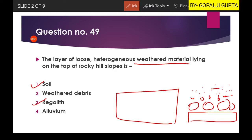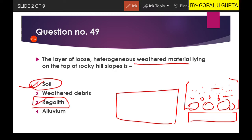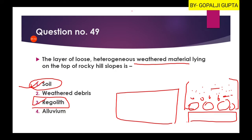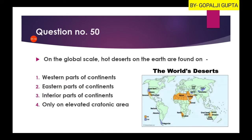This is known as regolith. Now if these fragments have the capacity to grow plants, then they will be called soil. So every soil is a regolith, but every regolith is not a soil. Hence, option three is our right answer.